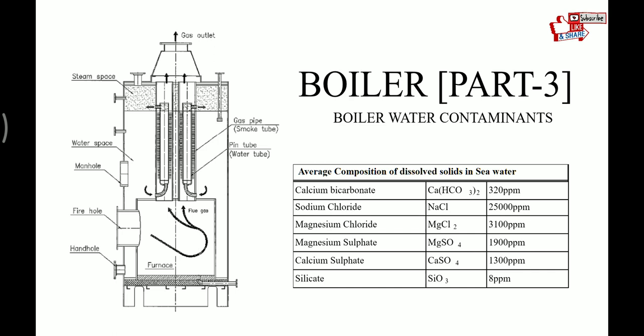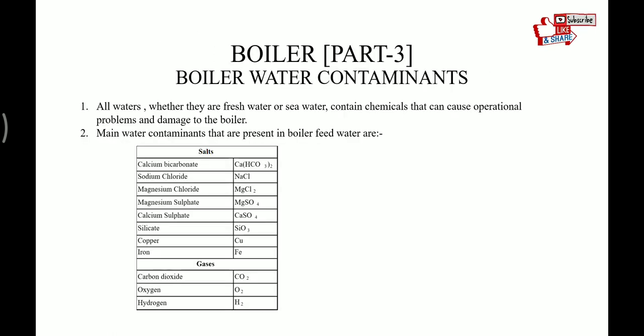Before we discuss all the contaminants, let's see the basics of salts. All water, whether fresh water or seawater, contains chemicals that can cause operational problems and damage to the boiler. Main water contaminants present in the feed water are calcium bicarbonate, sodium chloride, magnesium chloride, magnesium sulphate, calcium sulphate, silicate, copper, iron, carbon dioxide, oxygen, and hydrogen.